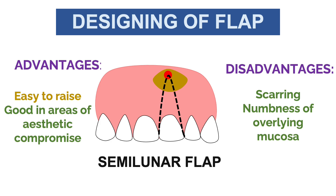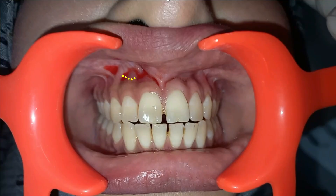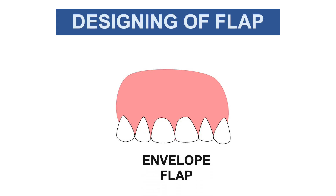Disadvantages of the semilunar flap include scarring and numbness of the overlying mucosa, though these are not always obvious. The incision is a bow-like curvature extending to a minimum of one tooth, as shown. They are basically used in apicectomies or surgical procedures of limited extent.